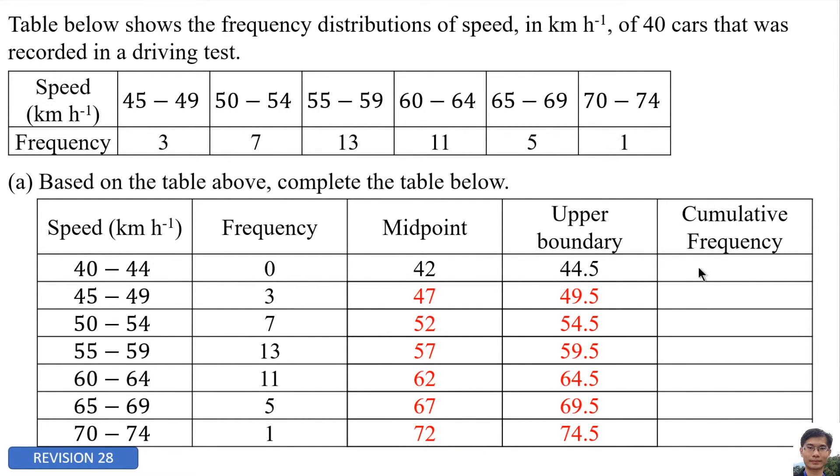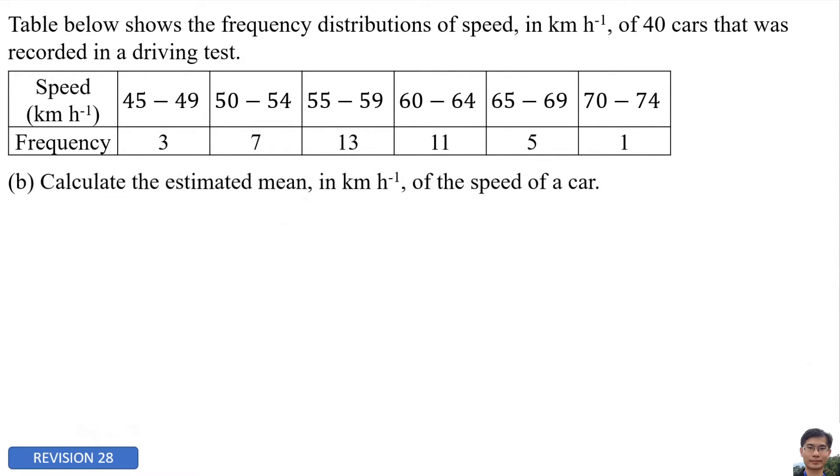Cumulative frequency: 0, and then 0 plus 3 equals 3, 3 plus 7 equals 10, 10 plus 13 equals 23, 23 plus 11 equals 34, 34 plus 5 equals 39, 39 plus 1 equals 40. We need to find estimated mean.